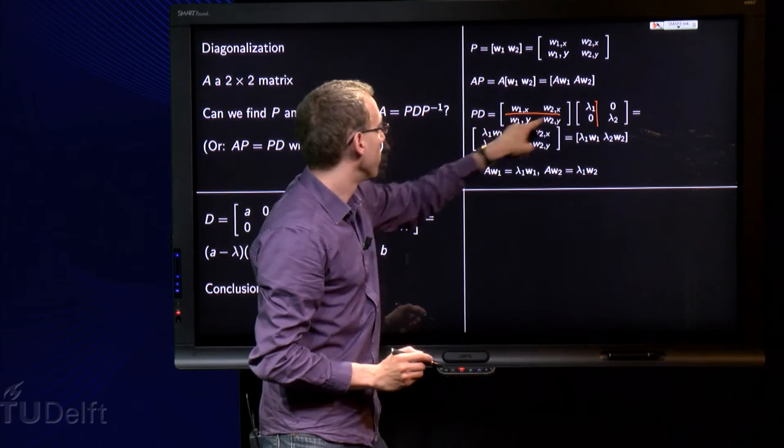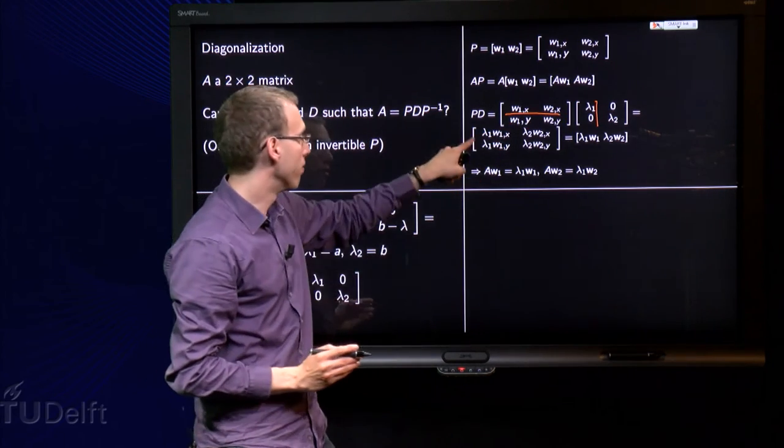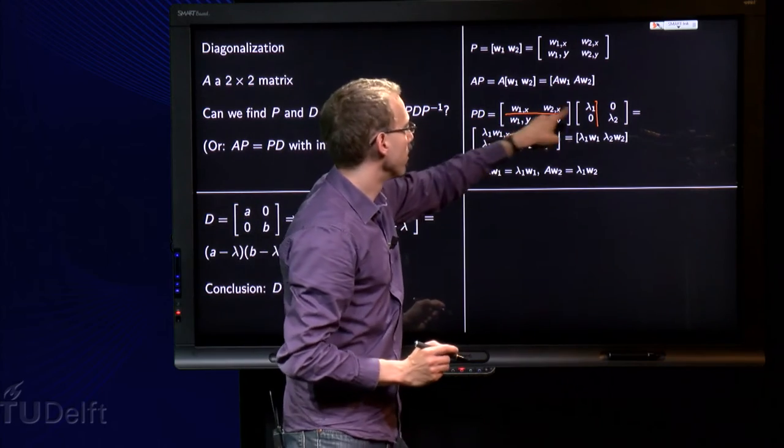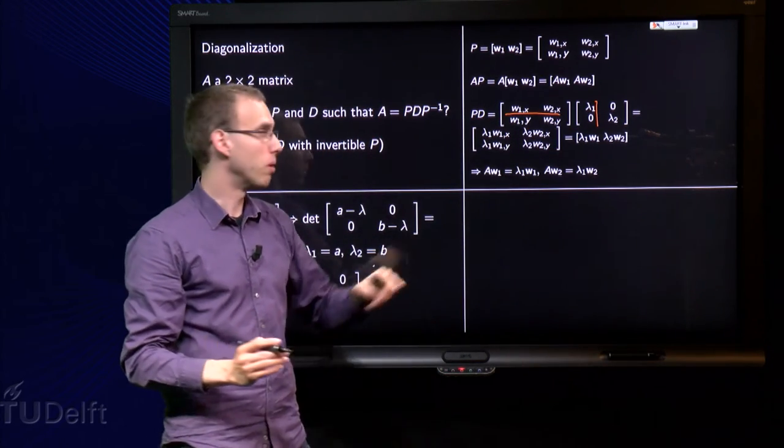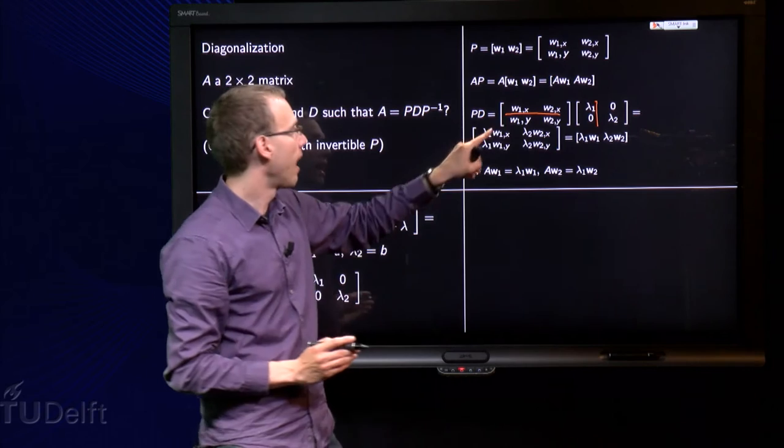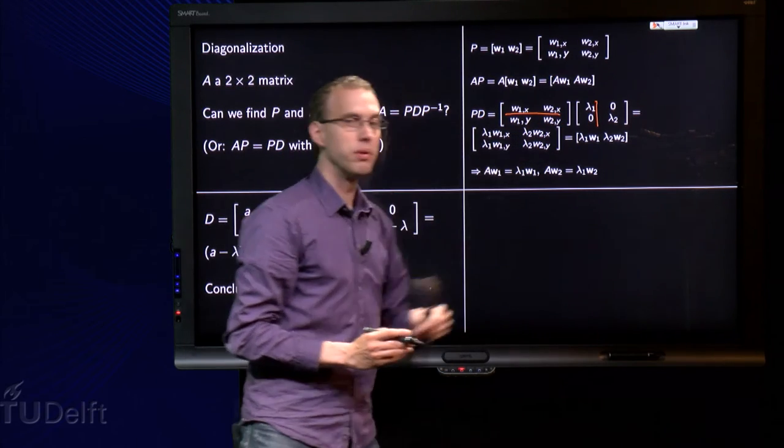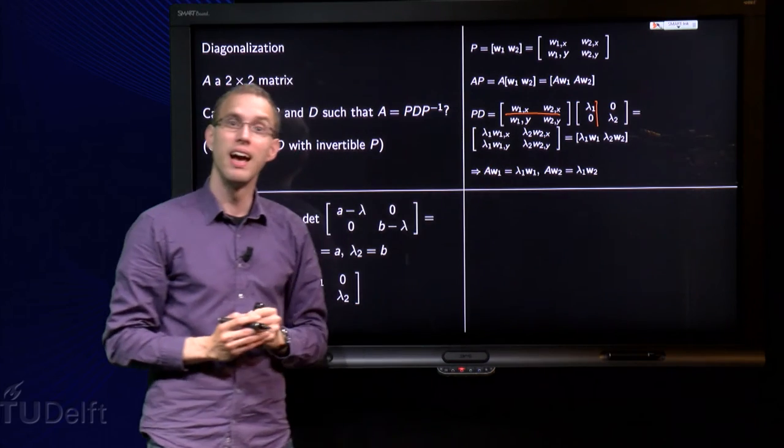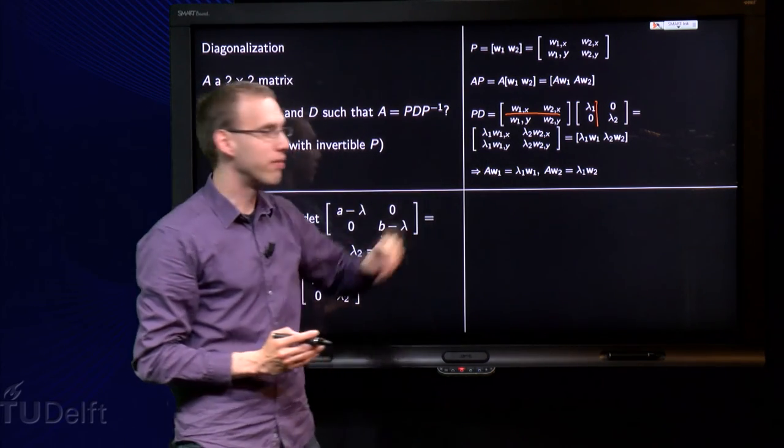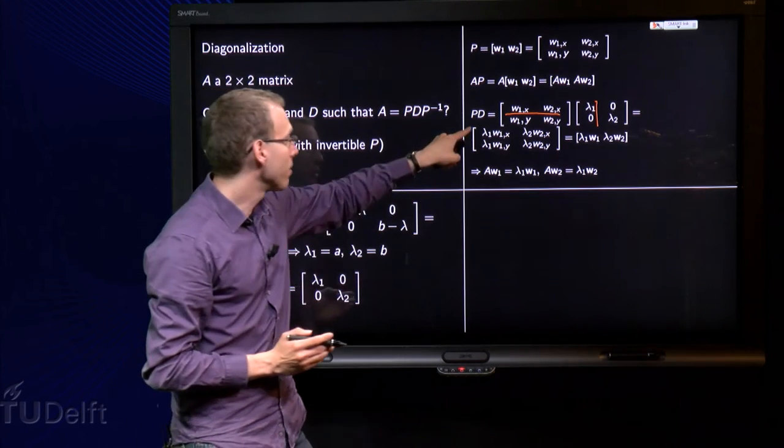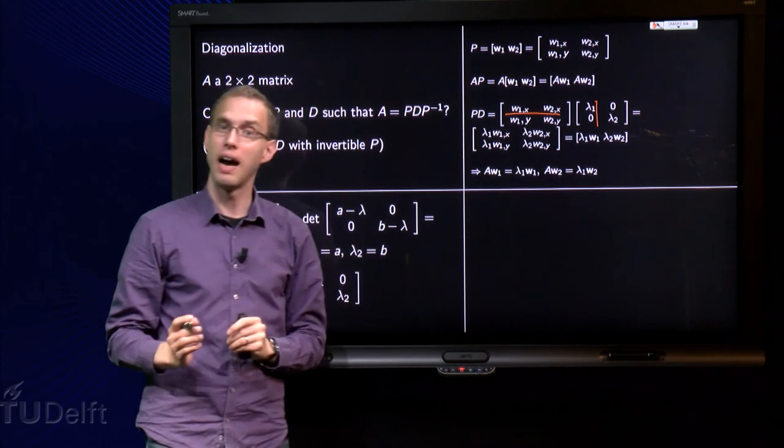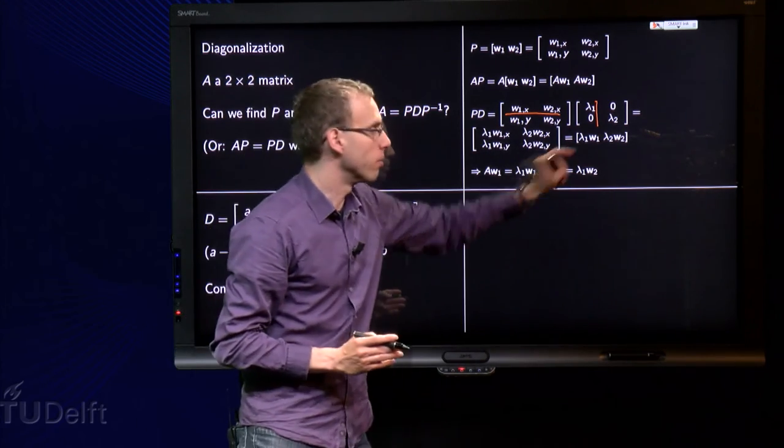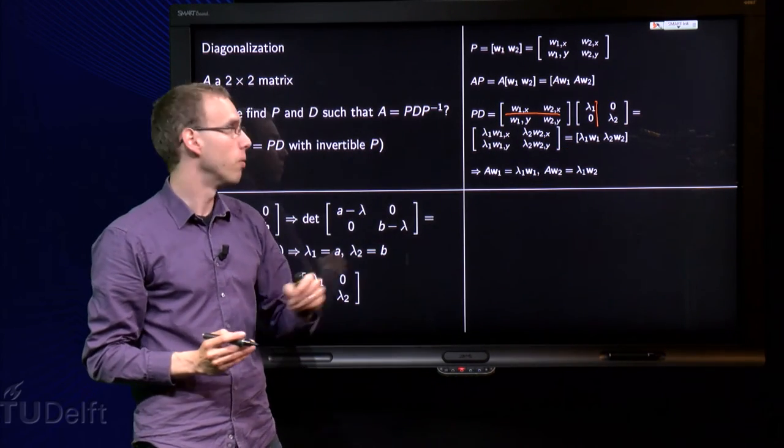w₁ₓ times λ₁ plus 0, and then λ₁ times w₁ᵧ plus 0, and then 0 plus λ₂ times w₂ₓ. And then we see something nice. Here we have exactly λ₁ times w₁, and on the second column we have exactly λ₂ times w₂.